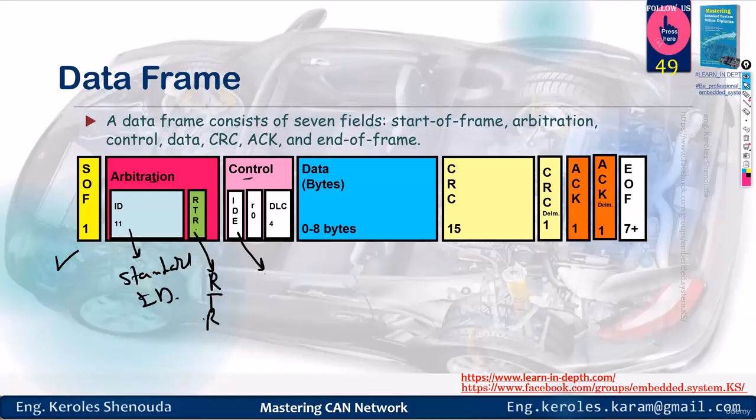Moving forward, the control field contains an IDE that indicates whether it's working in standard or extended mode. We've set this IDE to 0, implying it's operating in standard mode, which is solely 11 bits. Then there's a reserved bit, meaning it's held aside and no one uses it. Afterwards, it has 4 bits related to something called the data length counter.